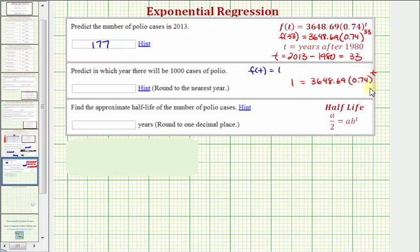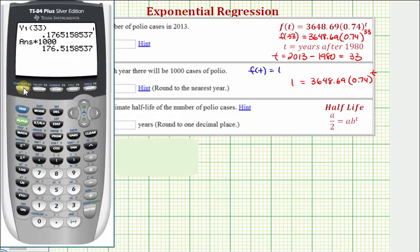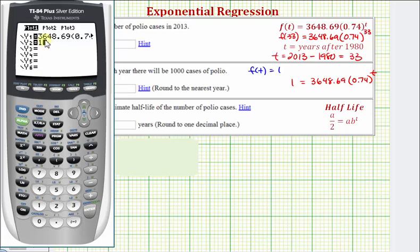So we want to solve the equation 1 equals 3648.69 times 0.74 raised to the power of t. And since we're not using logs yet, we'll go ahead and solve this using the graphing calculator. So we're going to press y equals, press enter here, and enter y2 equals 1. If we can find the intersection of these two functions, we can answer this question.